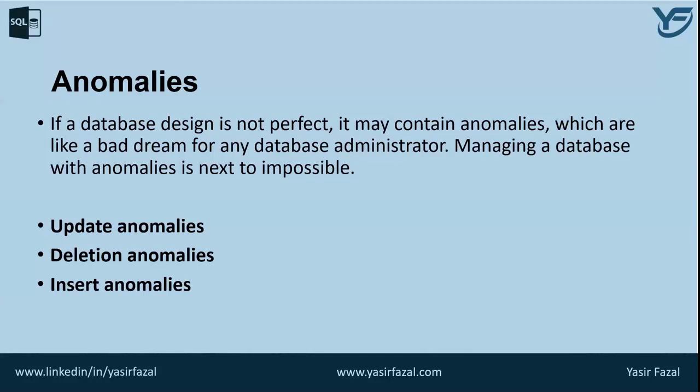So when we talk about anomalies and how to remove them, we utilize normalization. Normalization is a method to remove all these kinds of anomalies and bring the database into a consistent form. Briefly, there are basically three steps in normalization in which data is transformed into first, second, and third normal form.